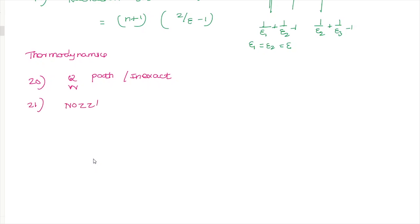The next question is about nozzles. Given h1, v1, and h2, you apply the steady flow energy equation (SFEE) to find v2. The data provided allows direct substitution to solve the problem.